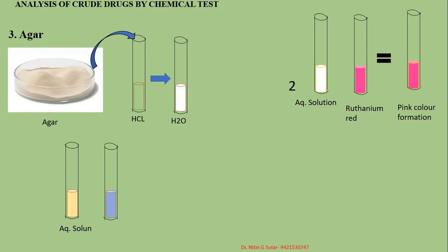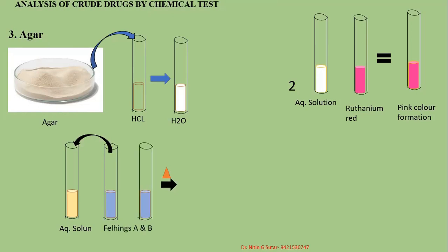When the aqueous solution is treated with ruthenium red: if agar is present, pink color is formed; if tragacanth is present, pink color is formed; whereas in the case of acacia, no pink color is formed. The aqueous solution of agar treated with Fehling's solution A and B, when heated, gives a red color precipitate. This is another test for agar.